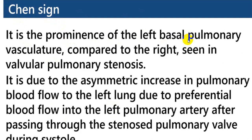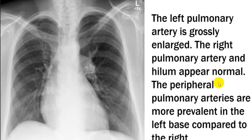The Chung sign: prominence of the left basal pulmonary vasculature compared to the right, due to pulmonary stenosis. It results from asymmetrical increase in pulmonary blood flow to the left lung — preferential blood flow into the left pulmonary artery after passing through the stenosed pulmonary valve during systole. The left pulmonary artery is grossly enlarged; the right hilum appears normal. Peripheral pulmonary arteries are more prevalent in the left base — this is called the Chung sign.